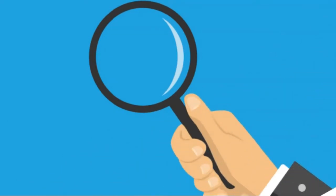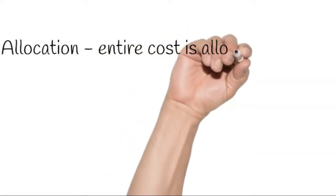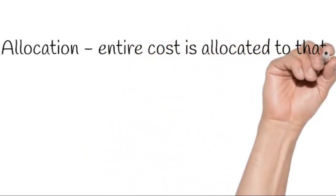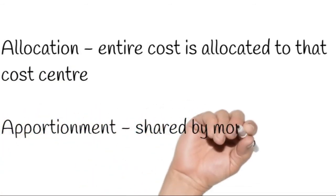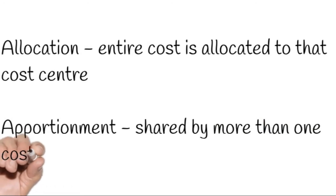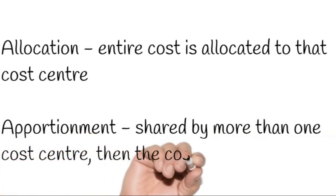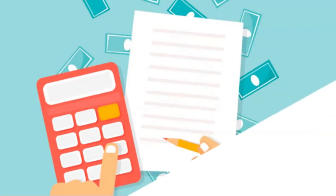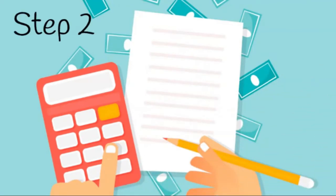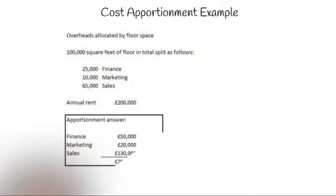The issue that we then face in accounting is how we divide those indirect costs between cost centres or products on a fair basis. We do this in three steps: allocation, apportionment and absorption. Step one, we can easily attribute direct costs to individual cost centres and identify indirect costs that will be shared by more than one cost centre. If they're attributable to just one cost centre we allocate those, which is known as cost allocation.